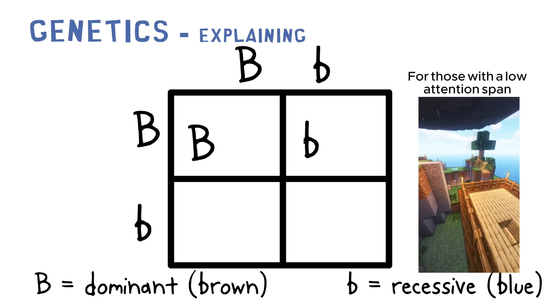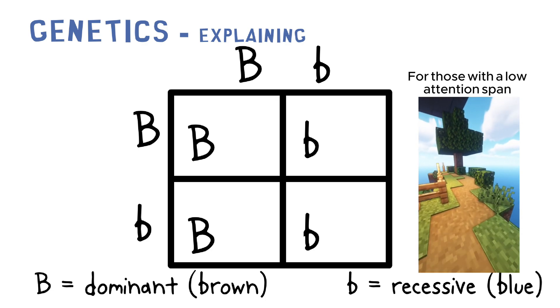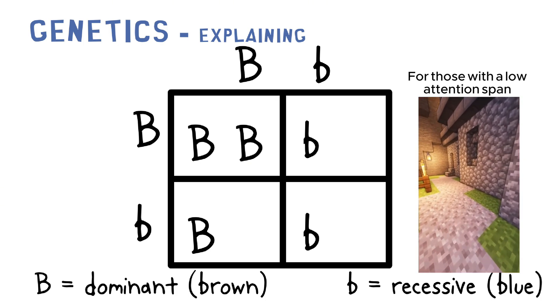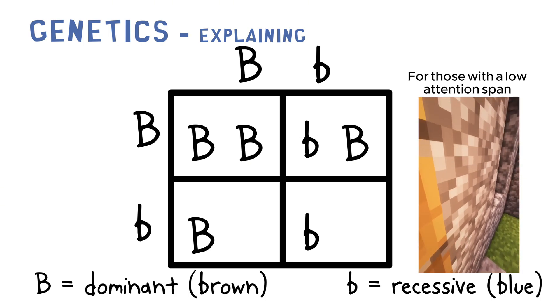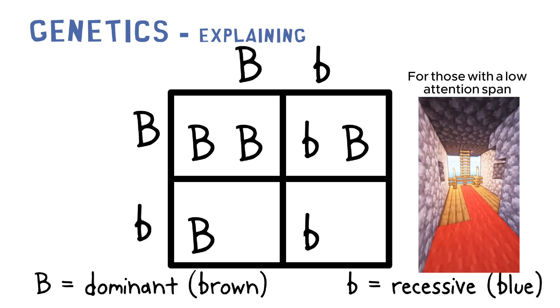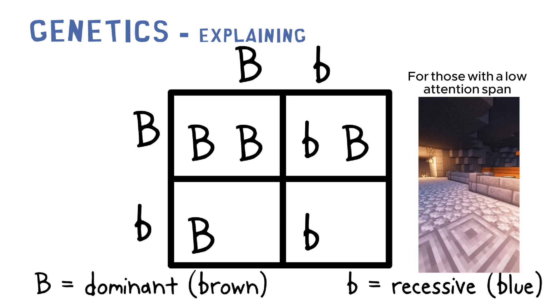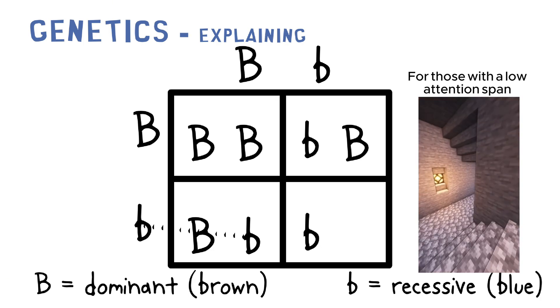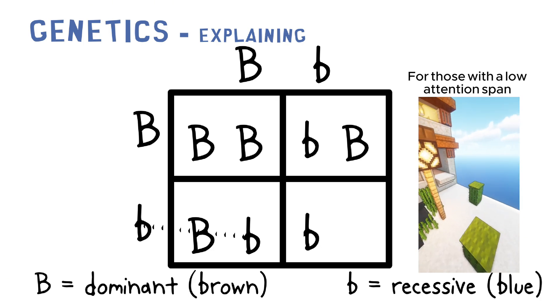Now what we do is we put this B right here, you see, and then same B on this square. And then we go to the other side of the Punnett square and put the other B in front of the first B, so y'all can kind of get what I'm doing. So we just repeat that process.